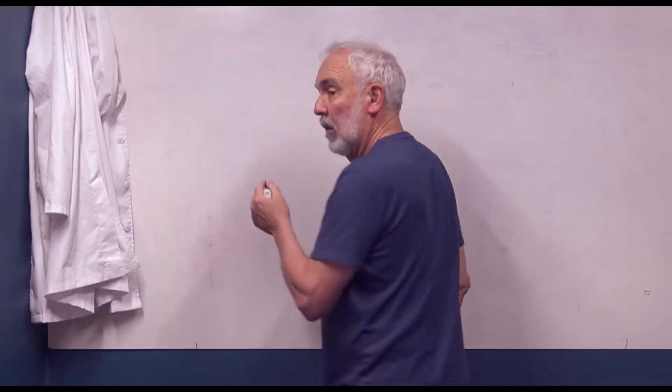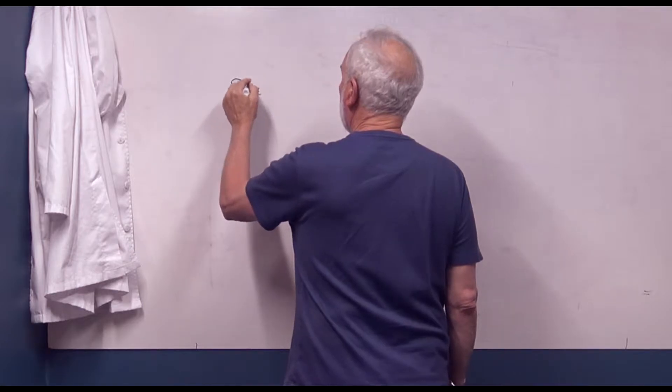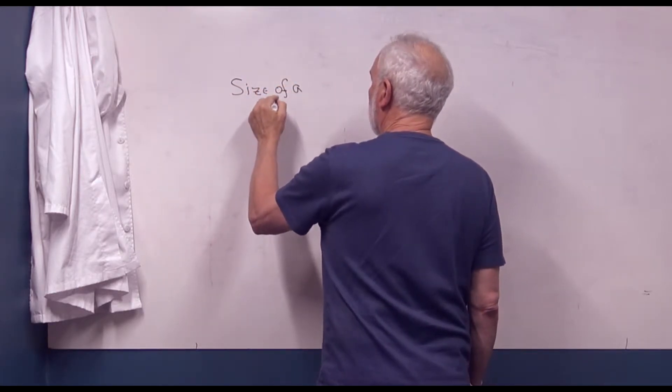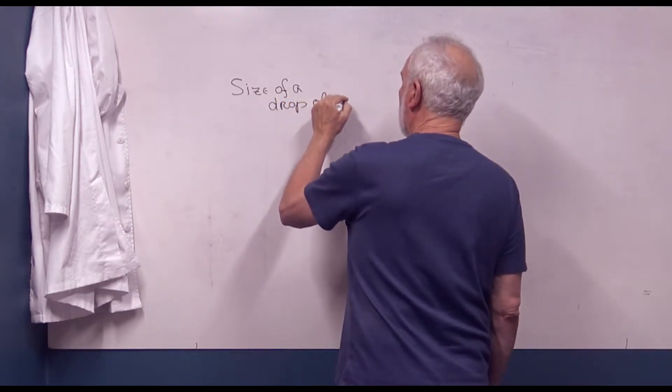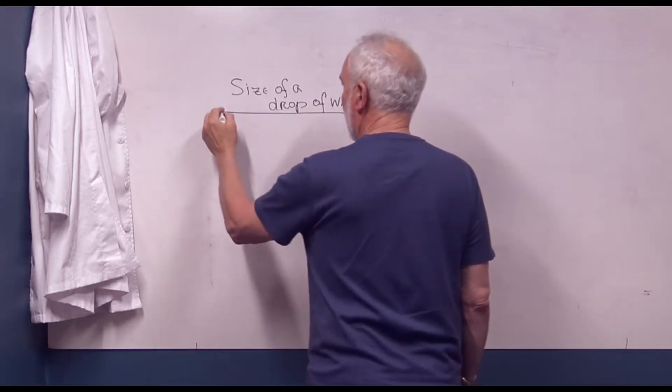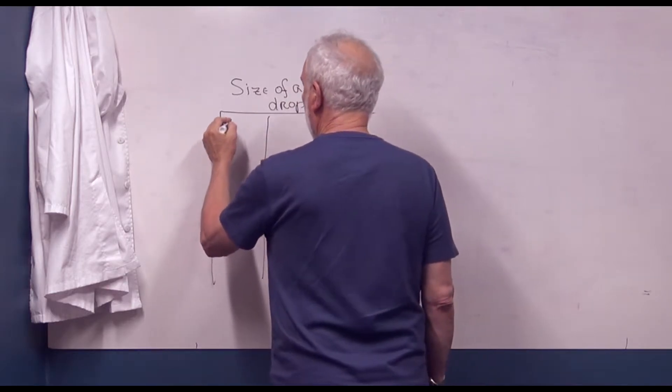The other thing we're going to do is construct a data table first. We're going to look at the size of a drop of water and we're going to construct it in such a way that we look at trials.